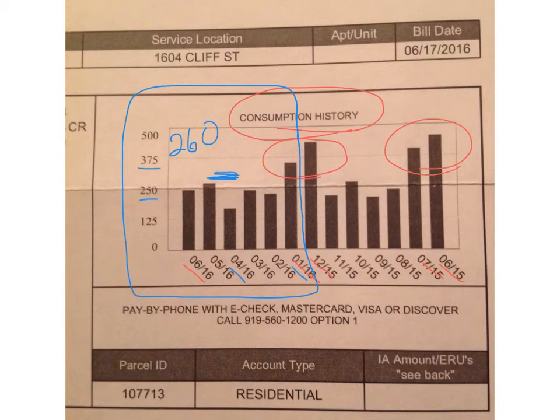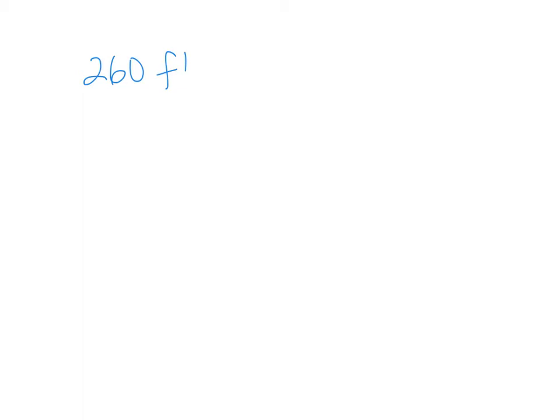This is 250 and that's 375, so I'm thinking this one right here is about the average. So then I have to ask, 260 what? What's the unit of measure here? Looking around on the bill, I find out it's 260 cubic feet per month.